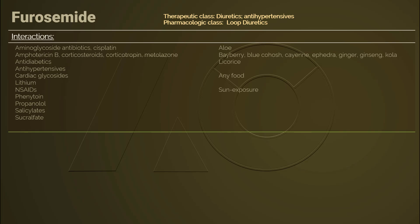Phenytoin can decrease the diuresis of furosemide. When used with propranolol, furosemide can increase propranolol levels, leading to hypotension — monitor the patient closely if using both medications. Furosemide can increase the toxicity of salicylates. Sucralfate can reduce the diuretic effect; use these medications apart by two hours.